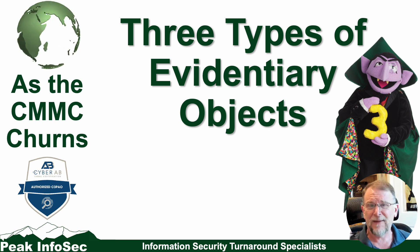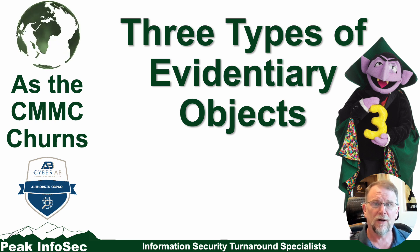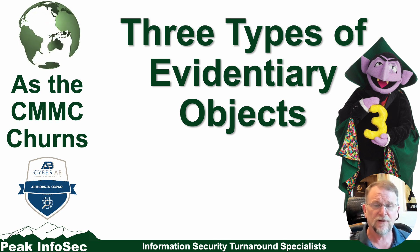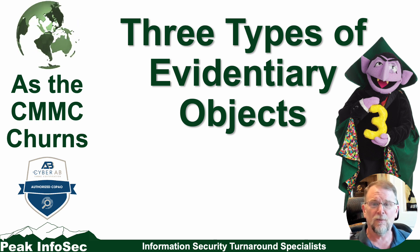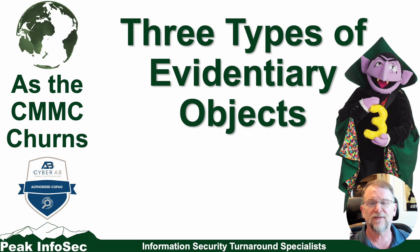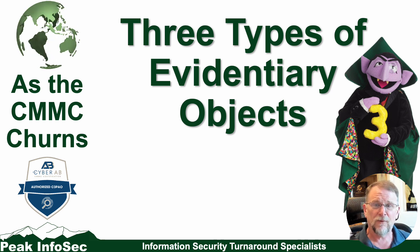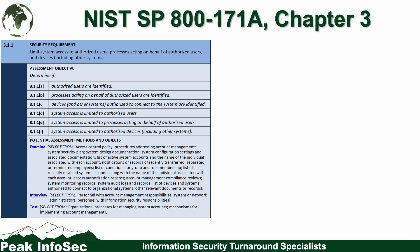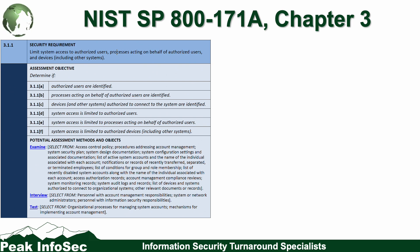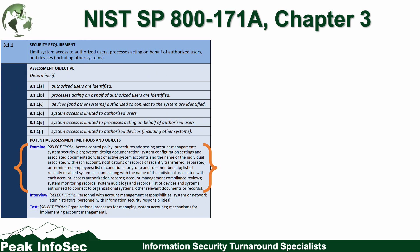This came out of us starting to look and prepare for CMMC certification events once the rule comes out, and then working with DIBCAC on JSVAs, seeing how they're doing it, and seeing how we'd like to improve and change their process as the starting baseline. Everything we're going to talk about does come out of NIST SP 800-171A, the assessment guide, specifically from Chapter 3. We're going to be looking at each of the different assessment requirements in the box defined in Chapter 3, specifically the assessment objects underneath the examination method.